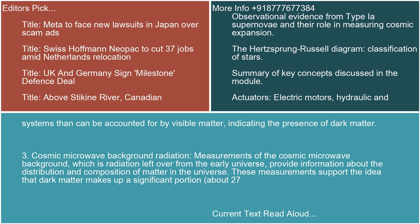3. Cosmic Microwave Background Radiation: Measurements of the cosmic microwave background, which is radiation left over from the early universe, provide information about the distribution and composition of matter in the universe. These measurements support the idea that dark matter makes up a significant portion, about 27%.